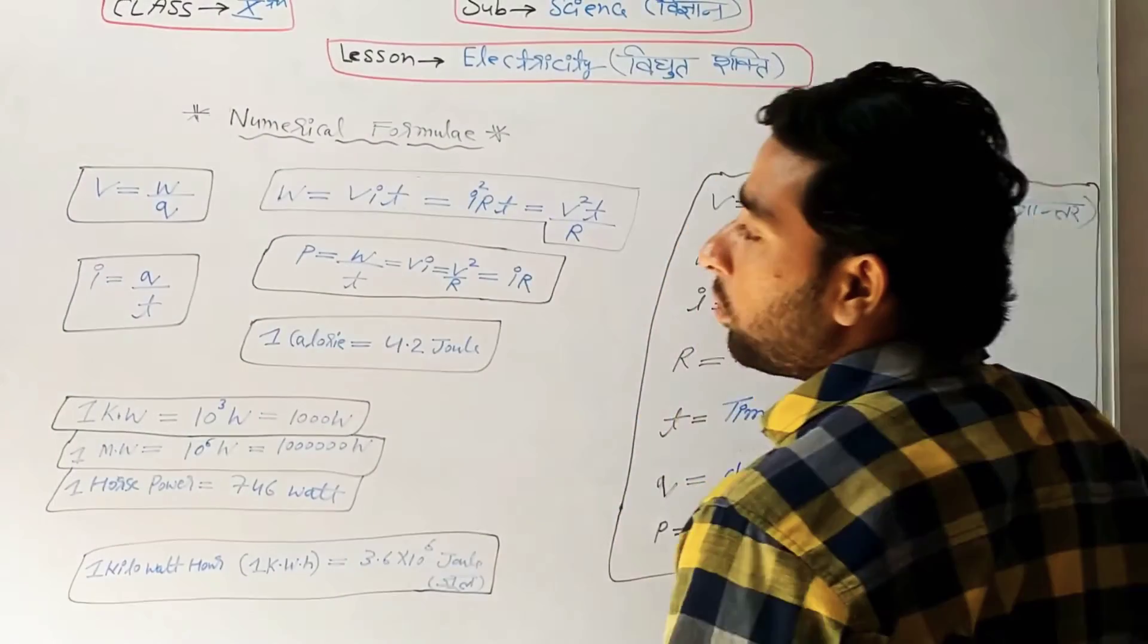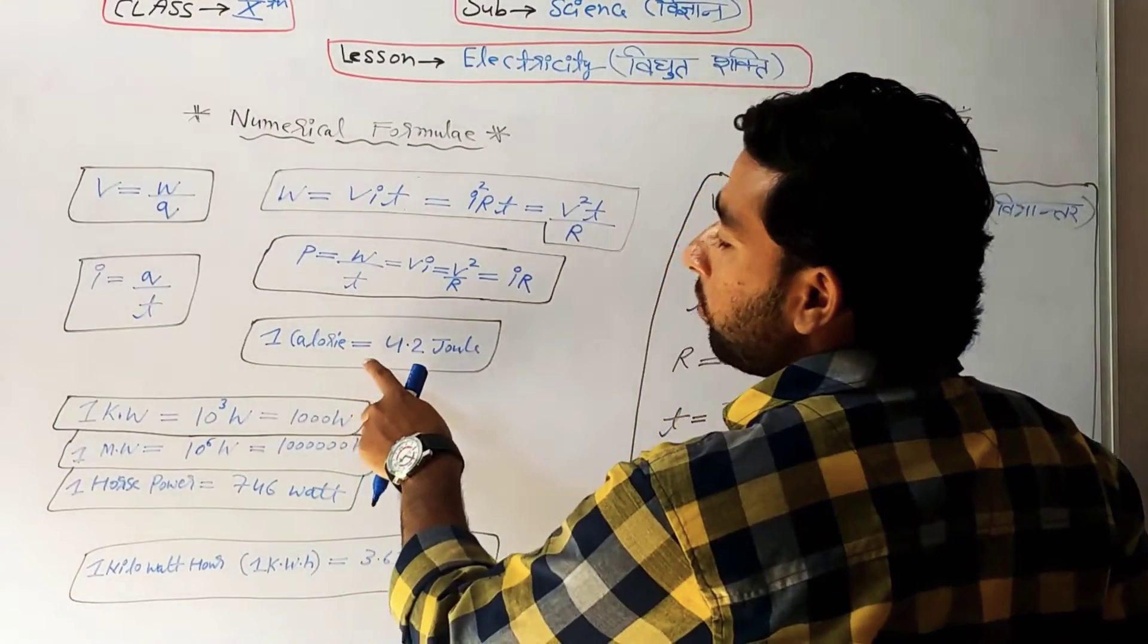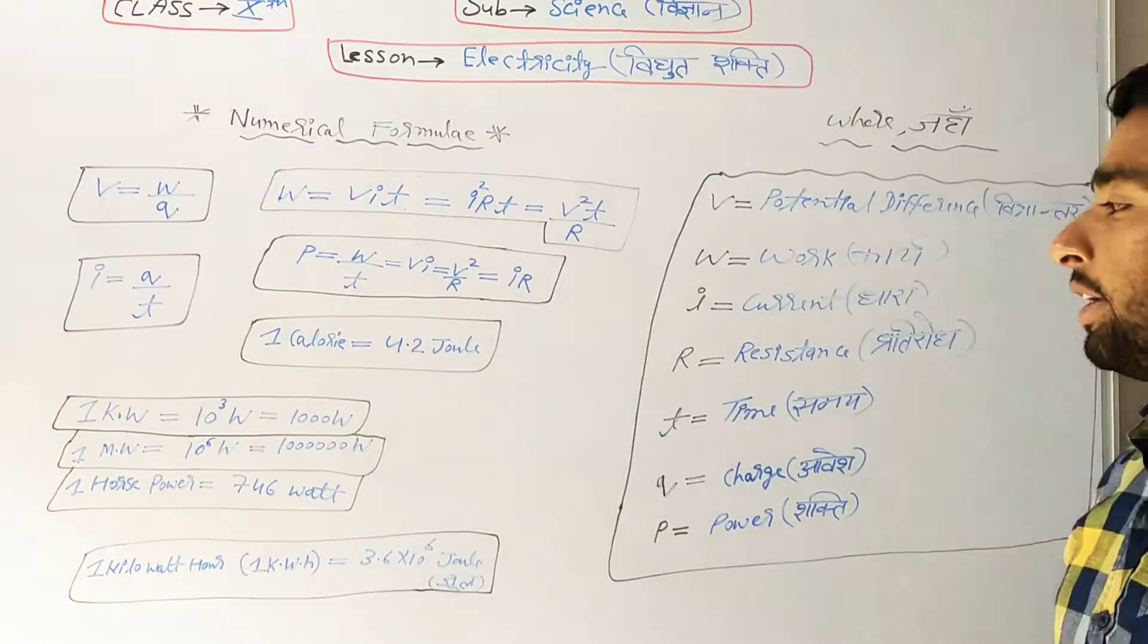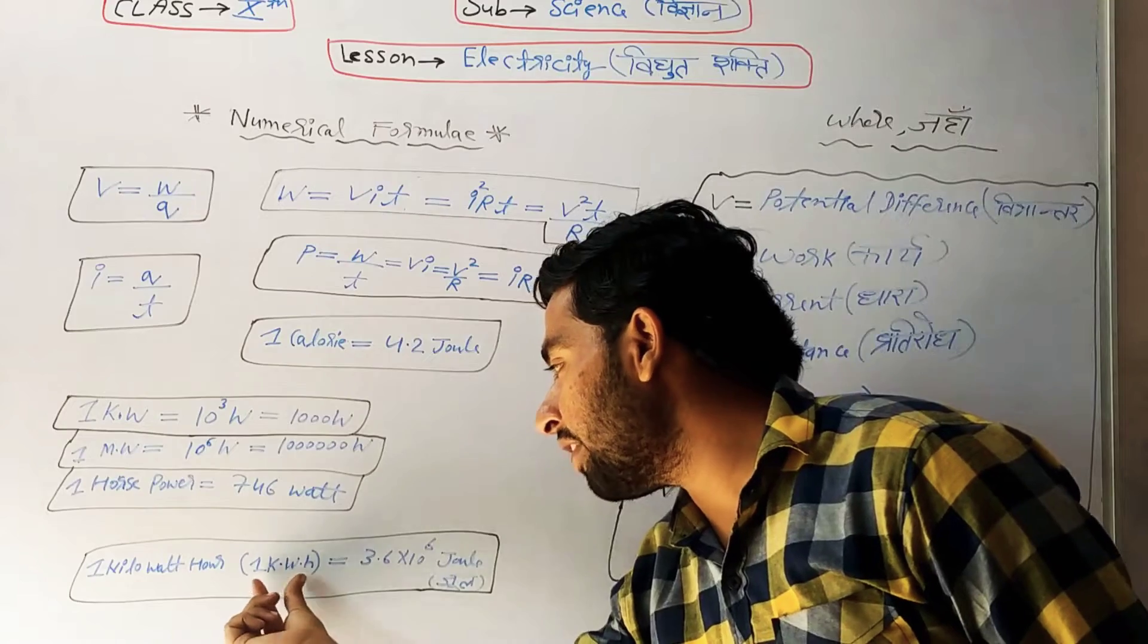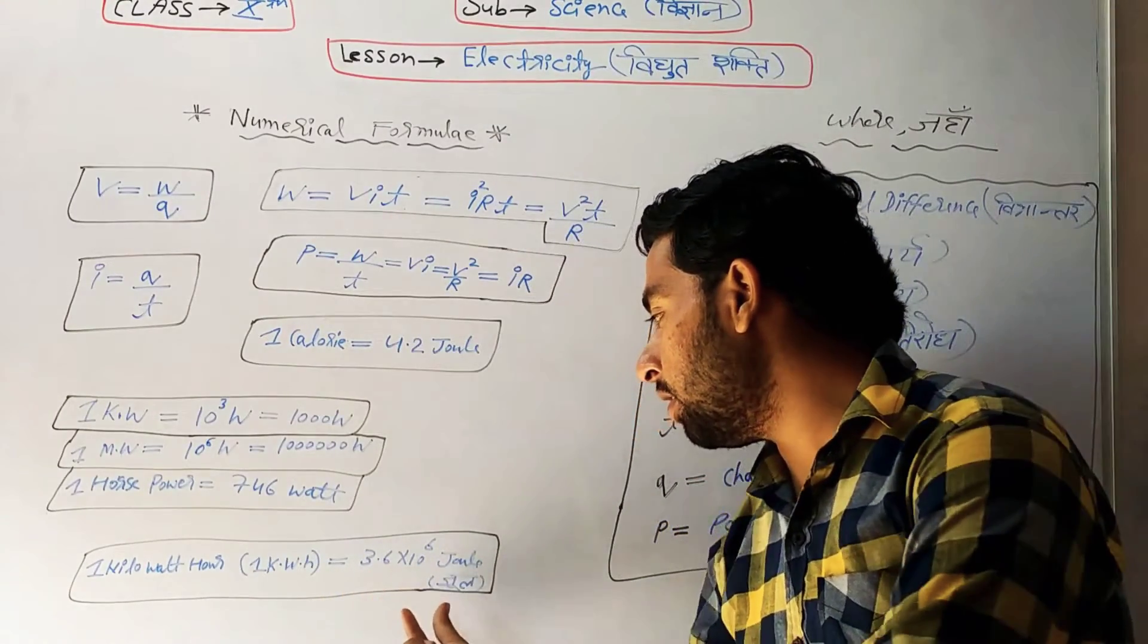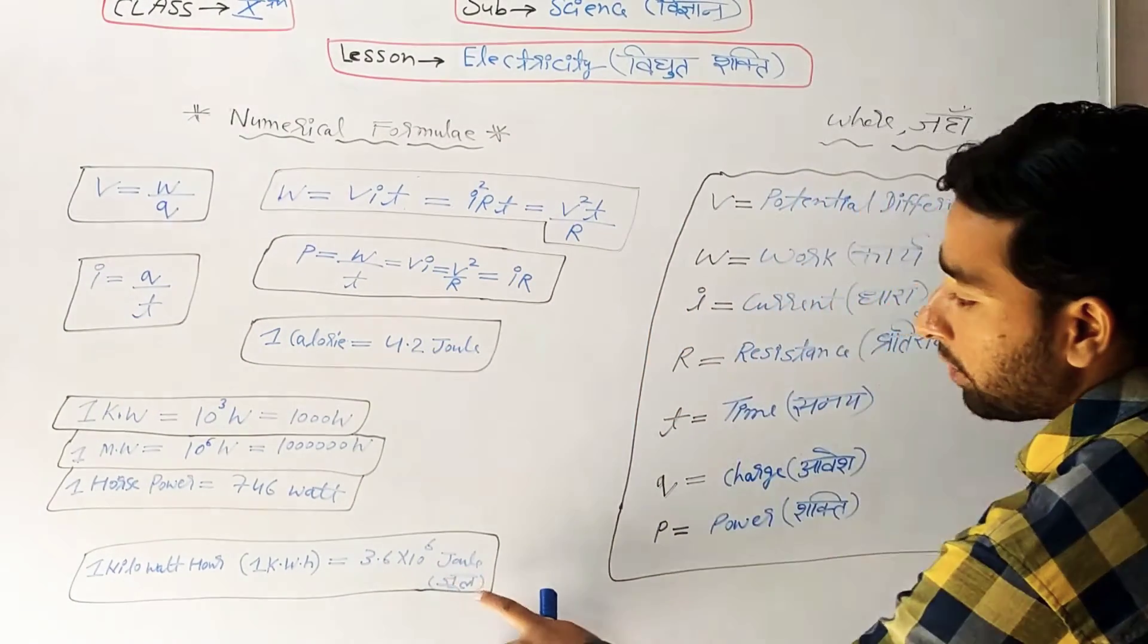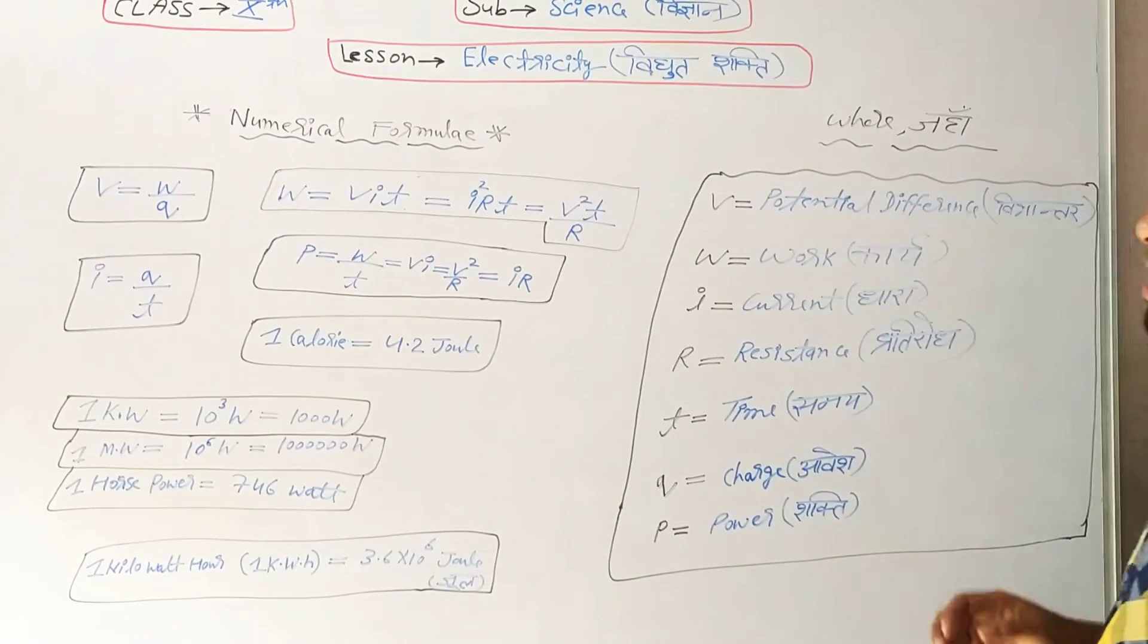V is equal to I·R. I is equal to Q/t. 1 calorie is equal to 4.2 joules. 1 horsepower is equal to 746 watts. 1 kilowatt hour is equal to 3.6 into 10 to the power 6 joules. These are the values.